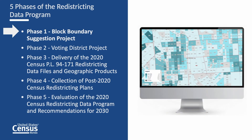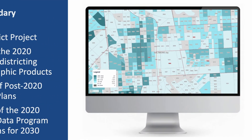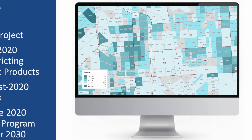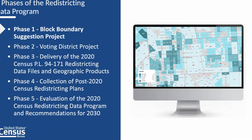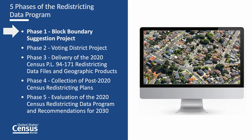The 2020 Census Redistricting Data Program has five phases. Phase one is the Block Boundary Suggestion Project, which provides states with the opportunity to submit their suggestions for the 2020 Census Tabulation Block Inventory. A block is the smallest geographic area for which census data are available. Blocks often use natural boundaries, such as streets and rivers.